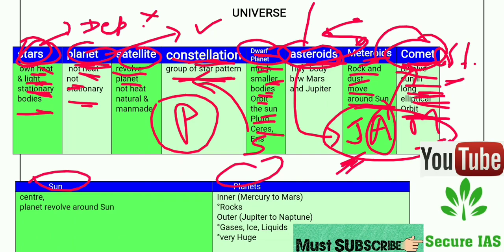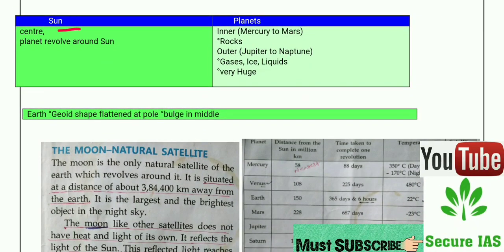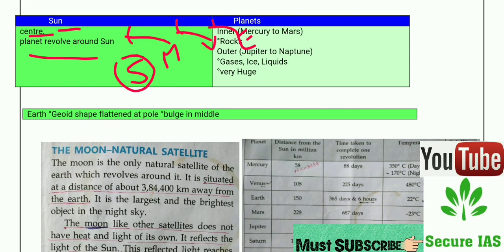The Sun is at the center and all planets revolve around it — Mercury, Venus, Earth, and all others. The Sun is like a grandfather and all planets are like children revolving around it. There are two types of planets: inner and outer planets.